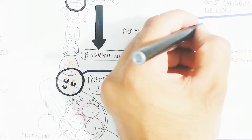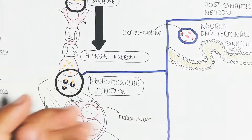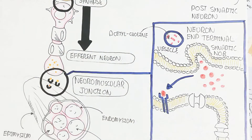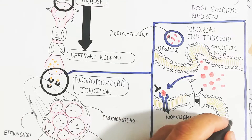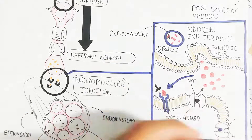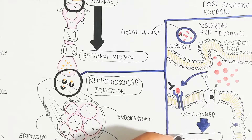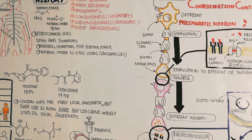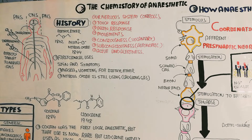At the neuromuscular junction, acetylcholine neurotransmitters are present in the pre-synaptic neuron's synaptic knob, which exocytoses them to target the acetylcholine receptor. After binding, sodium normally moves inside leading to contraction — but the anesthetic blocks the sodium channel, preventing sodium movement and thus causing paralysis of the muscle for a period of time. Thanks for watching this video about the biochemistry of anesthetics.